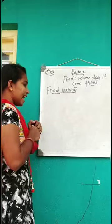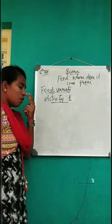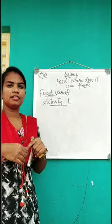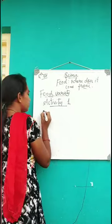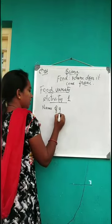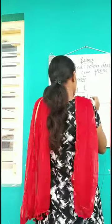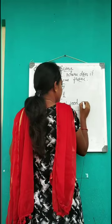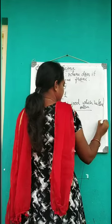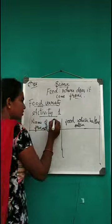Food variety means different types of food you will eat. There is an activity one given in your reader. What you have to do? Make two columns — the first column is the name of your friend, and the second column is the food which he or she ate.